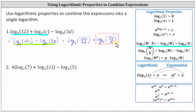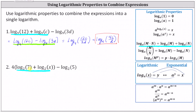Now let's look at the second expression. We have four times the sum of log base two of seven and log base two of X, minus log base two of five. There are a couple of ways we can begin — we could distribute the four, or we can simplify inside the parenthesis first by combining log base two of seven plus log base two of X. Let's combine inside the parenthesis first: that gives us log base two of 7X.